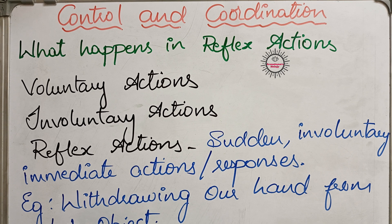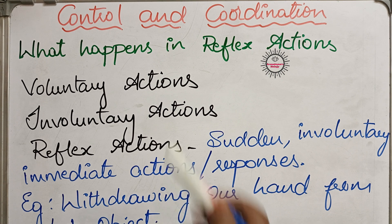For example: walking, running, reading a book, writing on the blackboard. All these are actions which take place with our knowledge, with our consciousness. We want to do them, that's why we are doing them. Those types of actions are called voluntary actions.